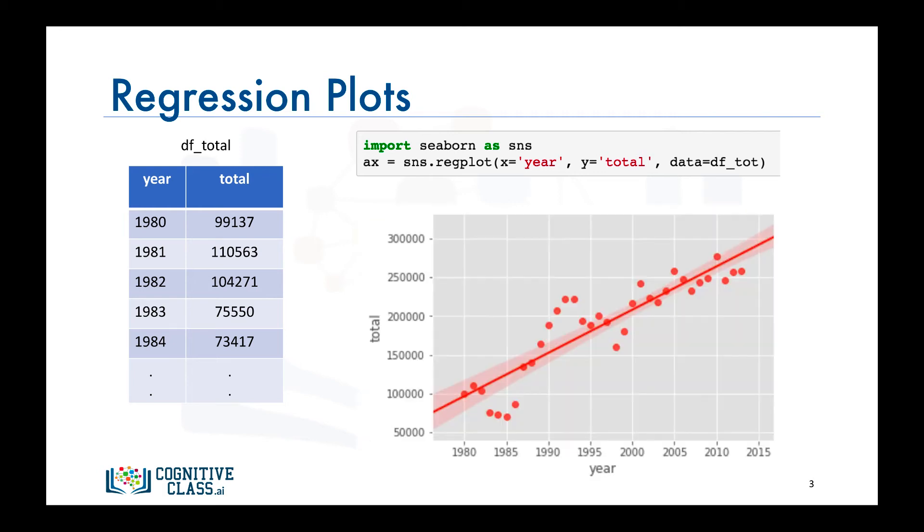The output of this one line of code is a scatter plot with a regression line and not just that, but also a 95% confidence interval. Isn't that really amazing?